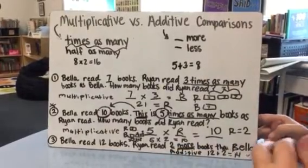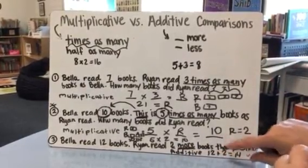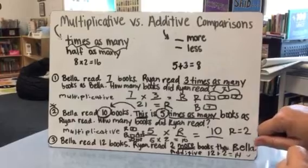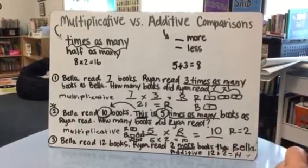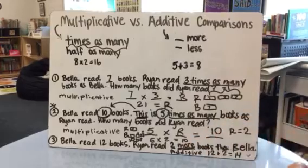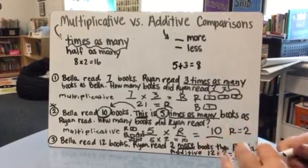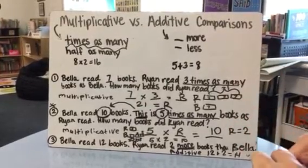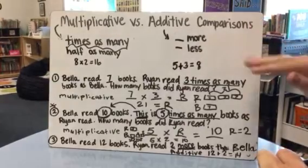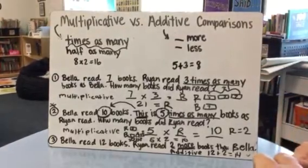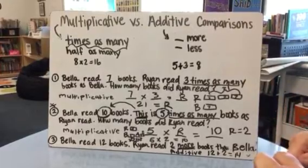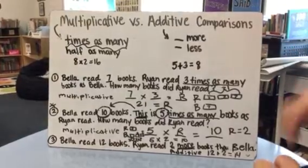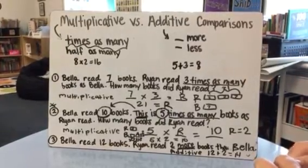For this additive comparison, the bar model would just show a bar of twelve for Bella and a bar of fourteen for Ryan to show the additive relationship. It's a little tricky at first and we're in the very beginning, so it takes practice — which is why we have this video, so kids can review the information, and parents can support their children at home. I hope that answered lots of questions about this big concept, and stay tuned for more math videos.